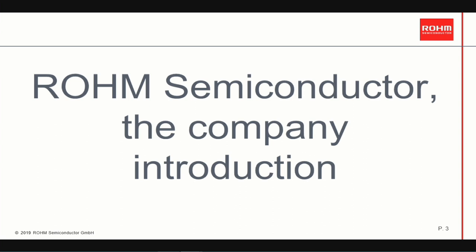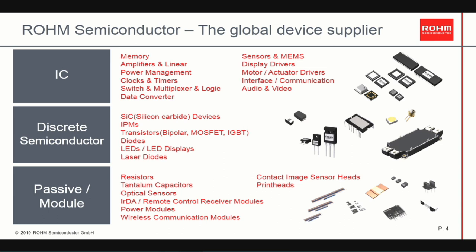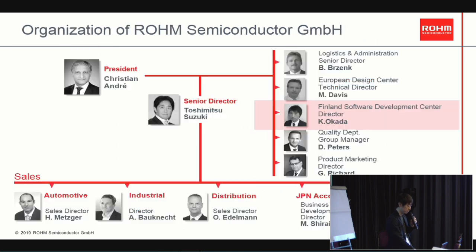I'll shortly introduce our company and team. ROM Semiconductor is a global device supplier. The headquarters are located in Kyoto, Japan, and we have over 23,000 employees in more than 35 countries. We have a strong product lineup which covers both analog and digital ICs, discrete semiconductors, passive components and modules.